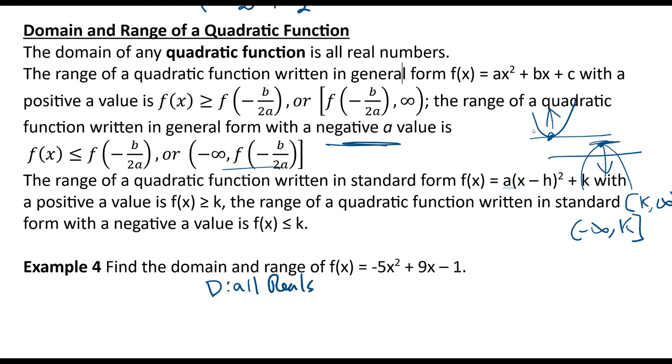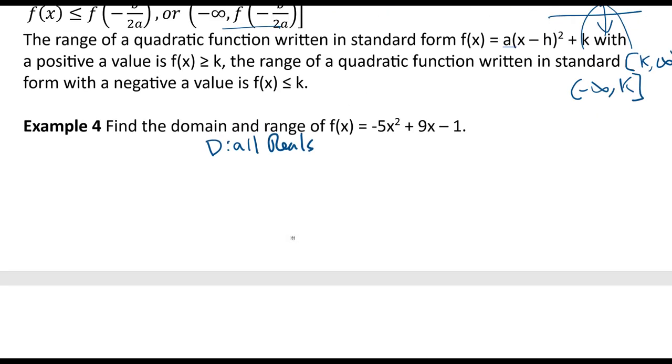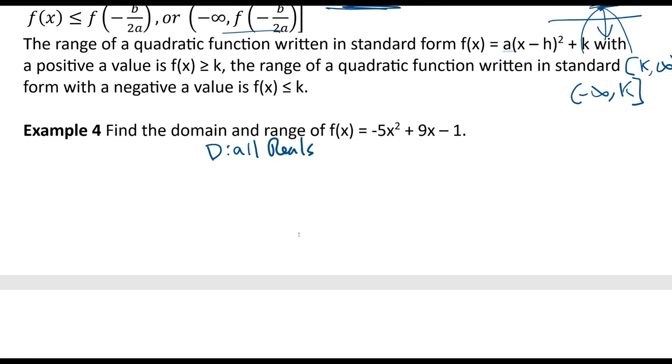The real question is what is our range? We don't have k, so we'll do -b/2a, so that's our h. So it's going to be negative of negative 9, or positive 9, negative of 9 over 2 times negative 5. So it's going to be 9/10, negatives cancel.